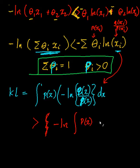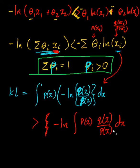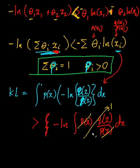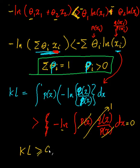The probability P(x) will cancel out, leaving just the integral of Q(x) dx. Since Q(x) is also a probability, it integrates to 1. The negative log of 1 is equal to 0. So the KL divergence is always greater than or equal to 0.